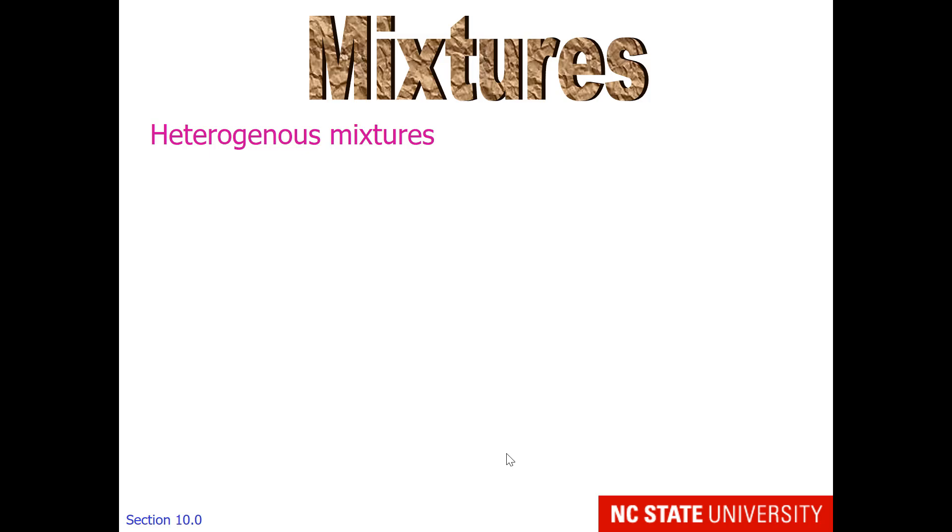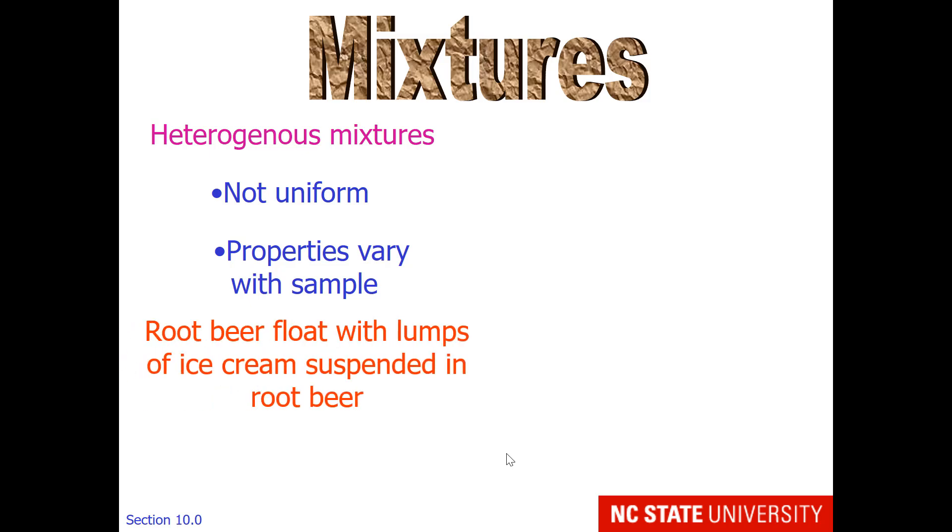There are heterogeneous mixtures. These are not uniform, meaning the properties vary with where you take the sample. An example would be a root beer float which would have lumps of ice cream on top and less ice cream on the bottom. A sip from the top would give you more ice cream, a sip from the bottom would give you more root beer.